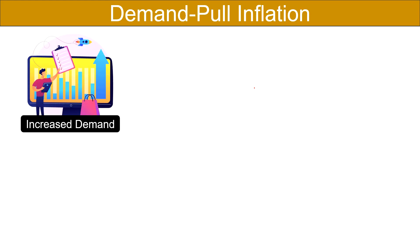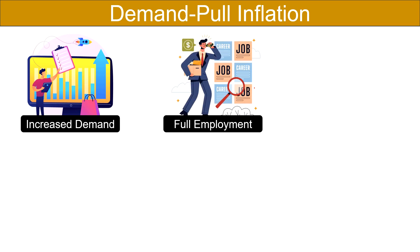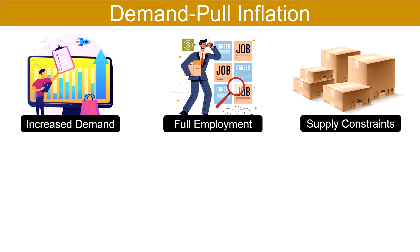Talking about the components of demand-pull inflation: increased demand. Demand-pull inflation is driven by a surge in demand for goods and services. This increase in demand can stem from various factors like increased consumer spending, investment, government expenditures, or even strong export demand. For demand-pull inflation to occur, the economy is typically operating close to or at full employment. When inputs are fully utilized, an increase in demand cannot be met with a corresponding increase in supply, leading to higher prices. The economy's ability to respond is limited due to constraints on production capacity, including limitations in skilled labor, production equipment, or raw materials.